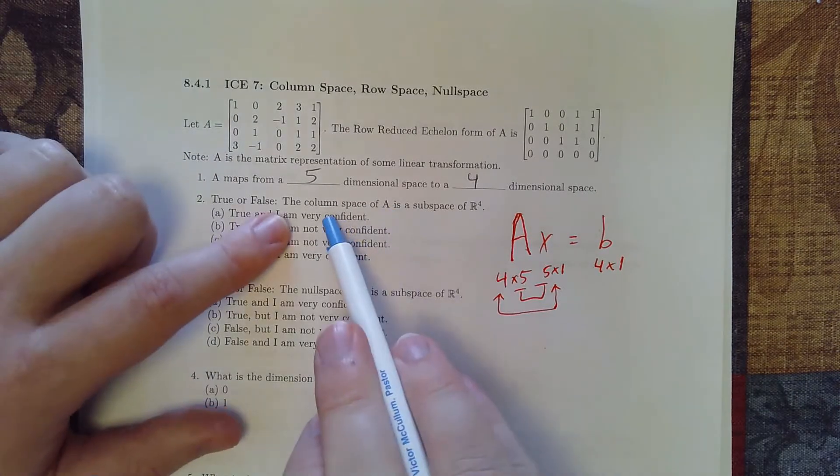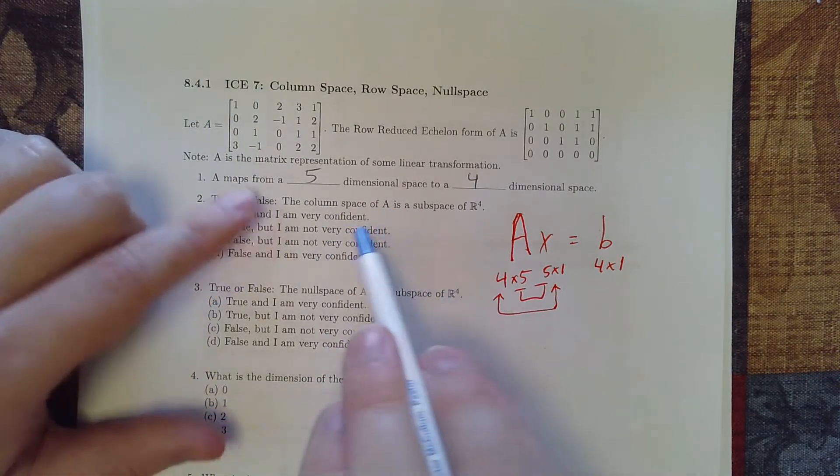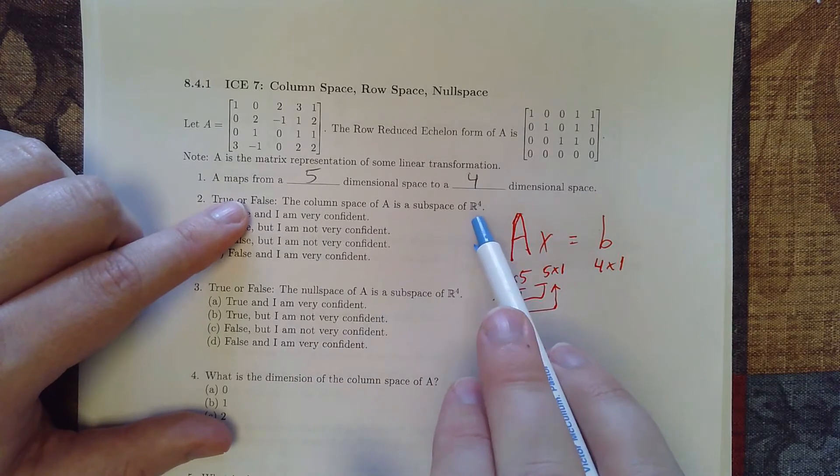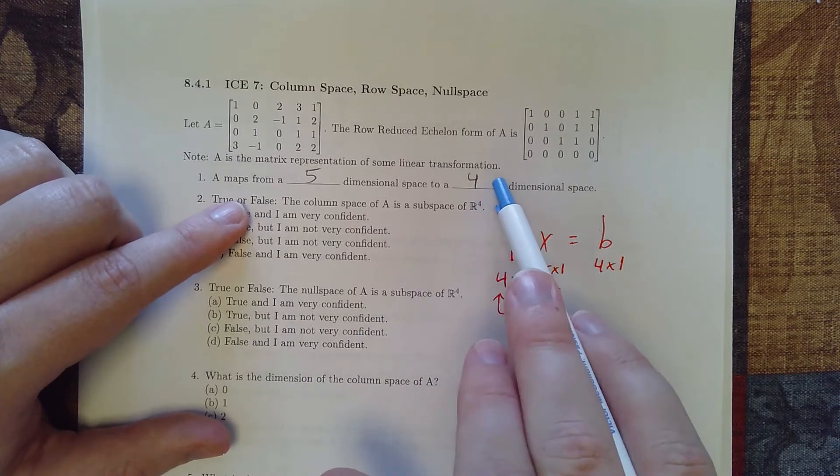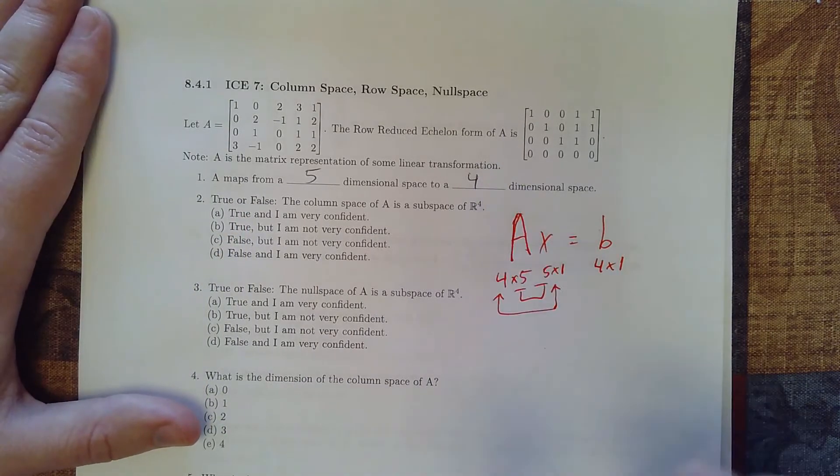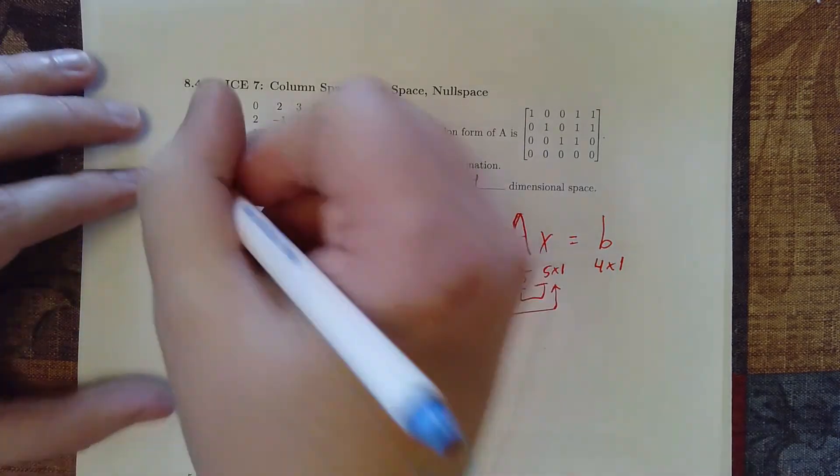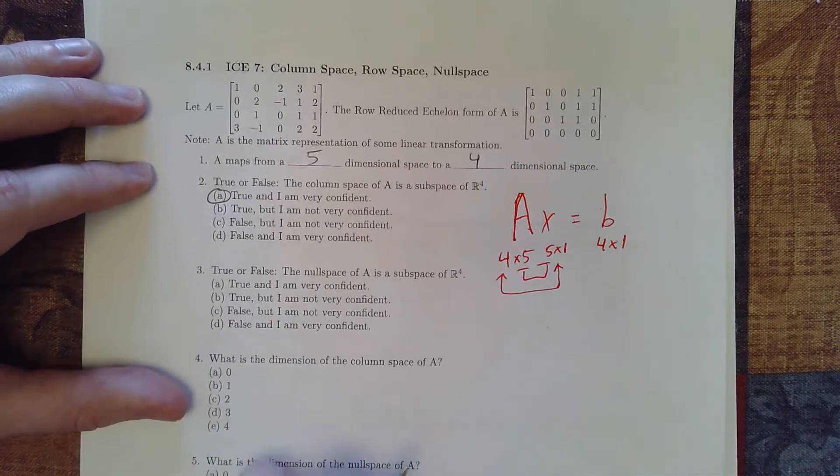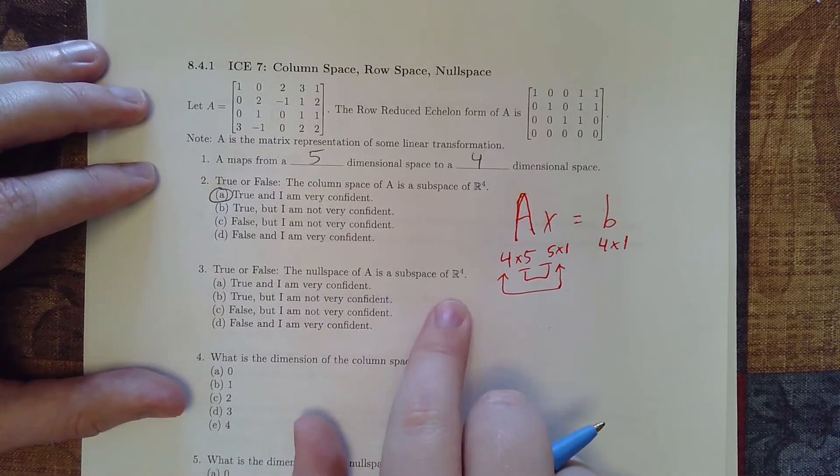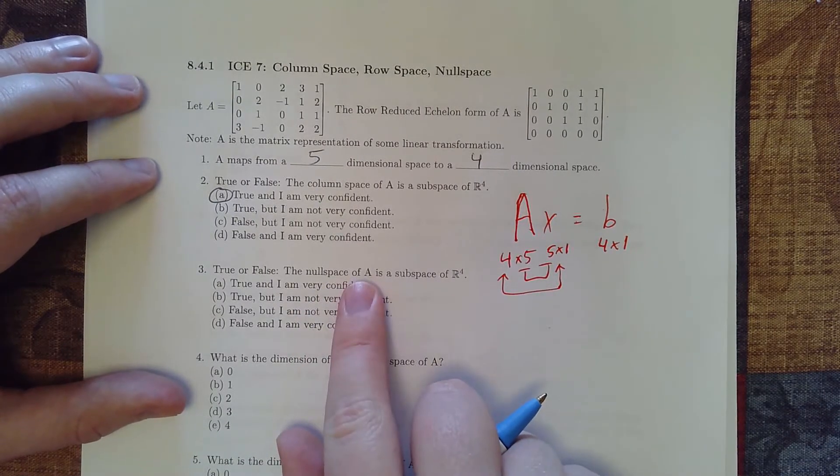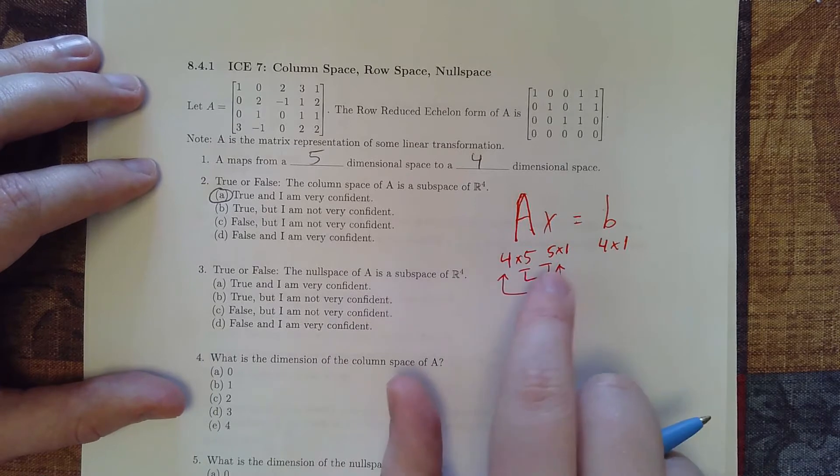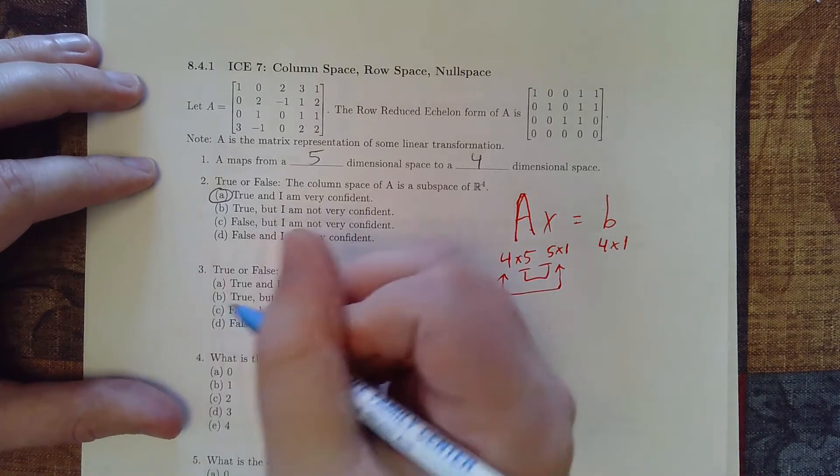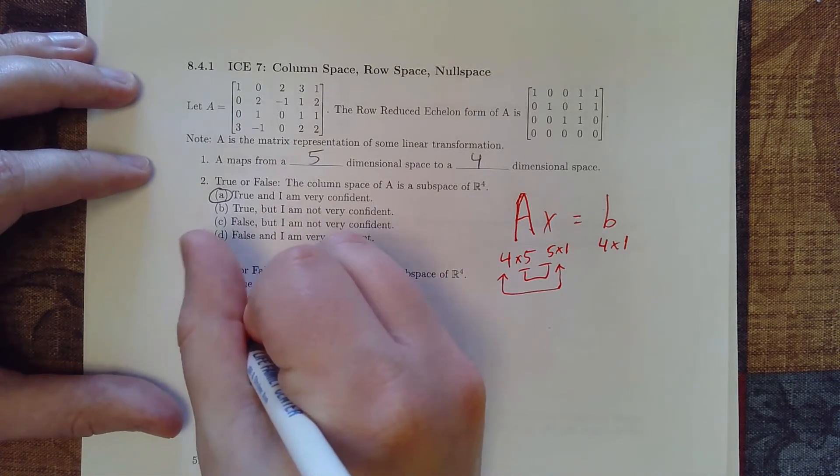So it's mapping from a five-dimensional space to a four-dimensional space. So the column space is going to be our set of potential outputs. So we want to know if it's a subset of subspace of R4. So since it's going to a four-dimensional space, and that's the thing we're looking at, then this is going to be something that is true. However, when we're looking at the null space, the null space is a subspace of the domain. And so the domain here is R5, not R4. So this is going to be something that is false.